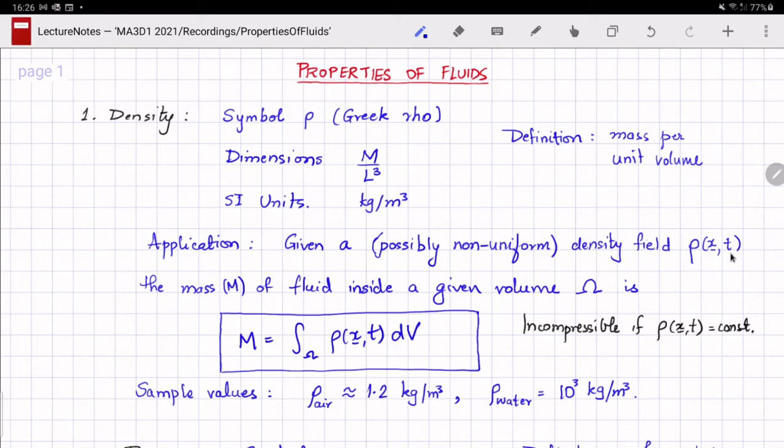If the density of a fluid does not depend on the spatial coordinates or on time, for example water in day-to-day circumstances, then the fluid is termed as incompressible. Sample values of density are that the density of air is about 1.2 kgs per meter cubed at mean sea level and temperature and the density of water is about 1000 kgs per meter cubed.